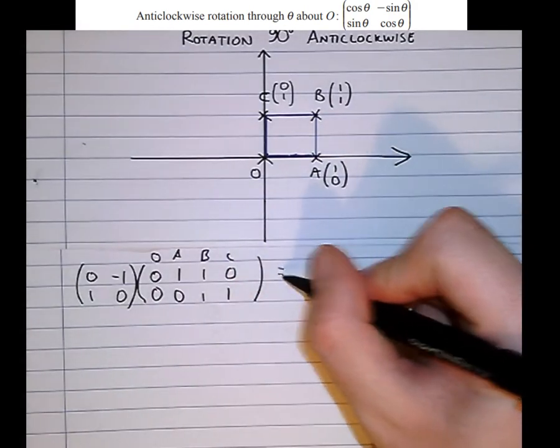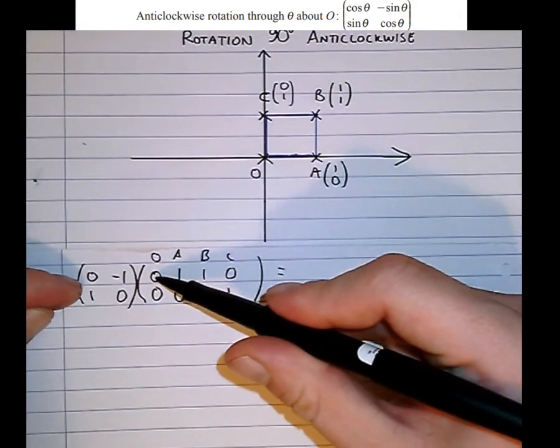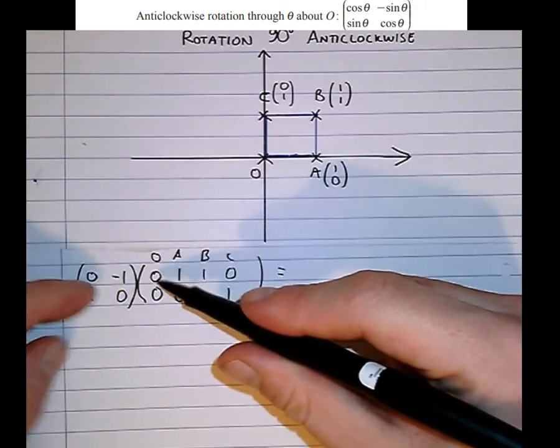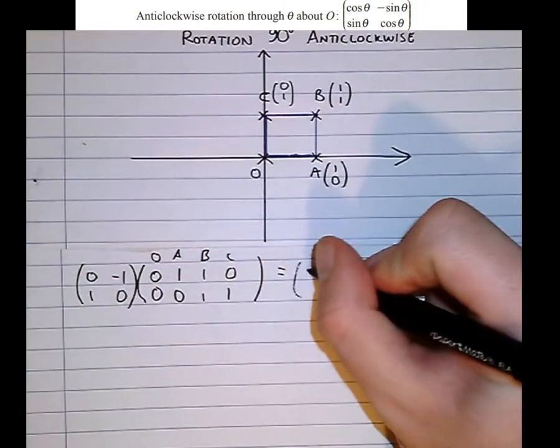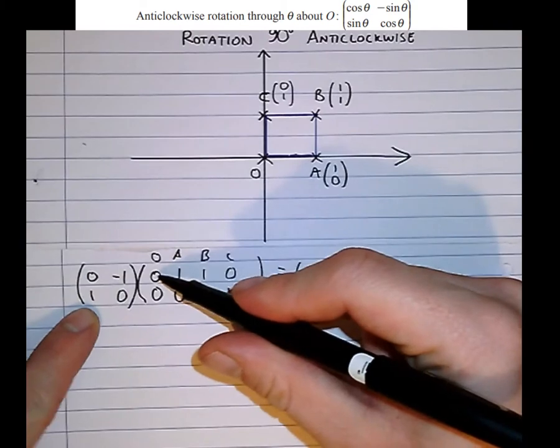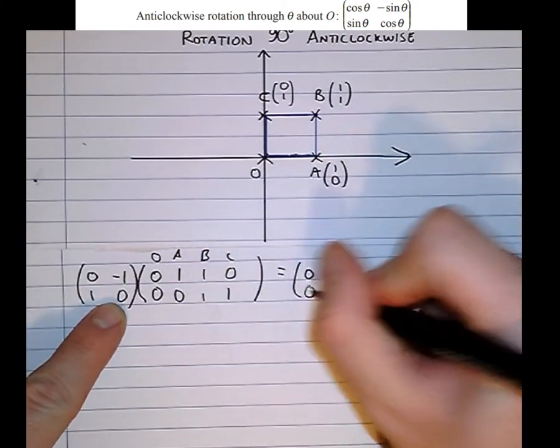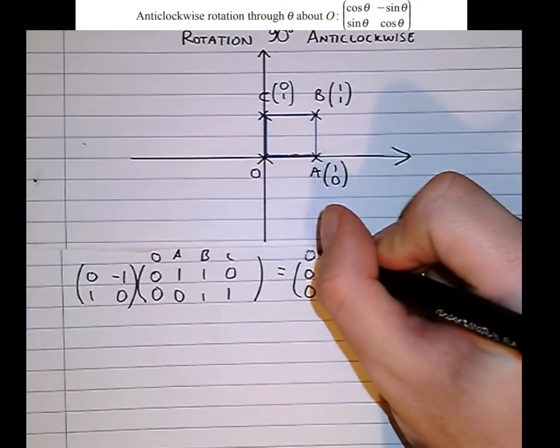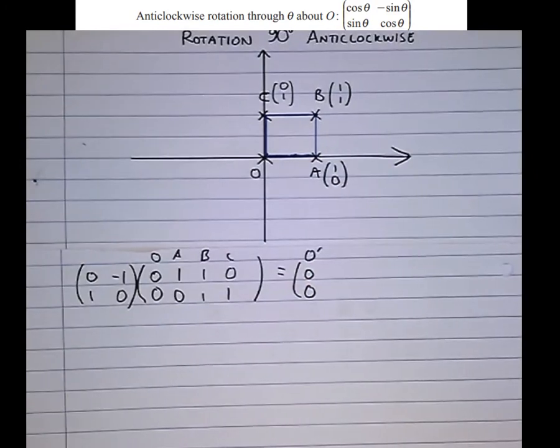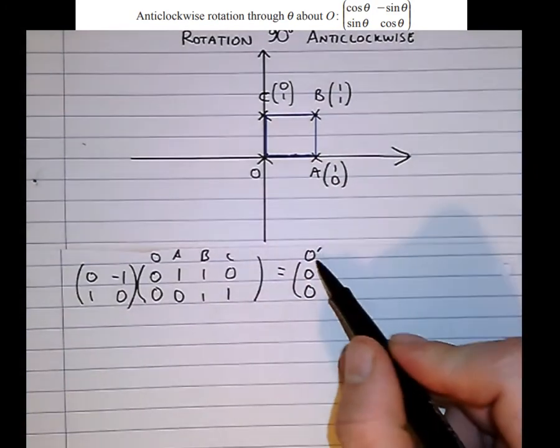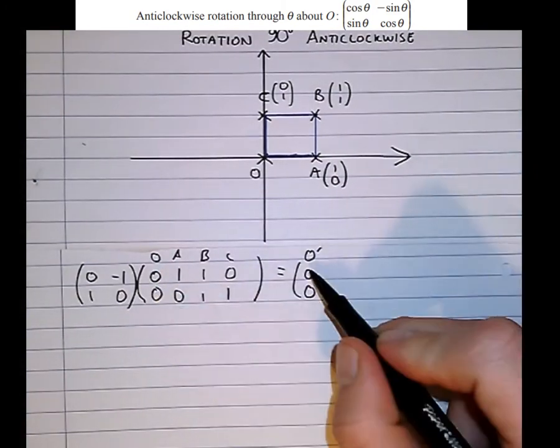And doing simple matrix multiplication, 0 times 0 plus 1 times 0 is 0. Minus 1 times 0 plus 0 times 0 is 0. And there we have the image O dash of O. So the origin 0, 0 goes to 0, 0.